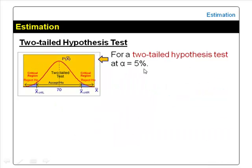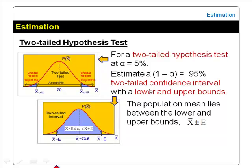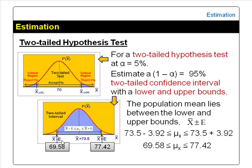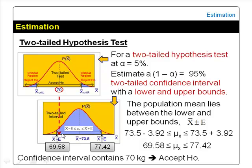Finally, for a two-tailed hypothesis test at α = 5%, we estimate a 95% two-tailed confidence interval, which has both lower and upper bounds. The peak is at the sample mean, 73.5 kg, and the bounds are given by the sample mean ± margin of error. With a sample mean of 73.5 kg and a margin of error of 3.92 kg, the population mean can be any value between 69.58 and 77.42 kg. Since the interval contains the 70 kg stated in the null hypothesis, we accept the null hypothesis — the same conclusion as the hypothesis test.